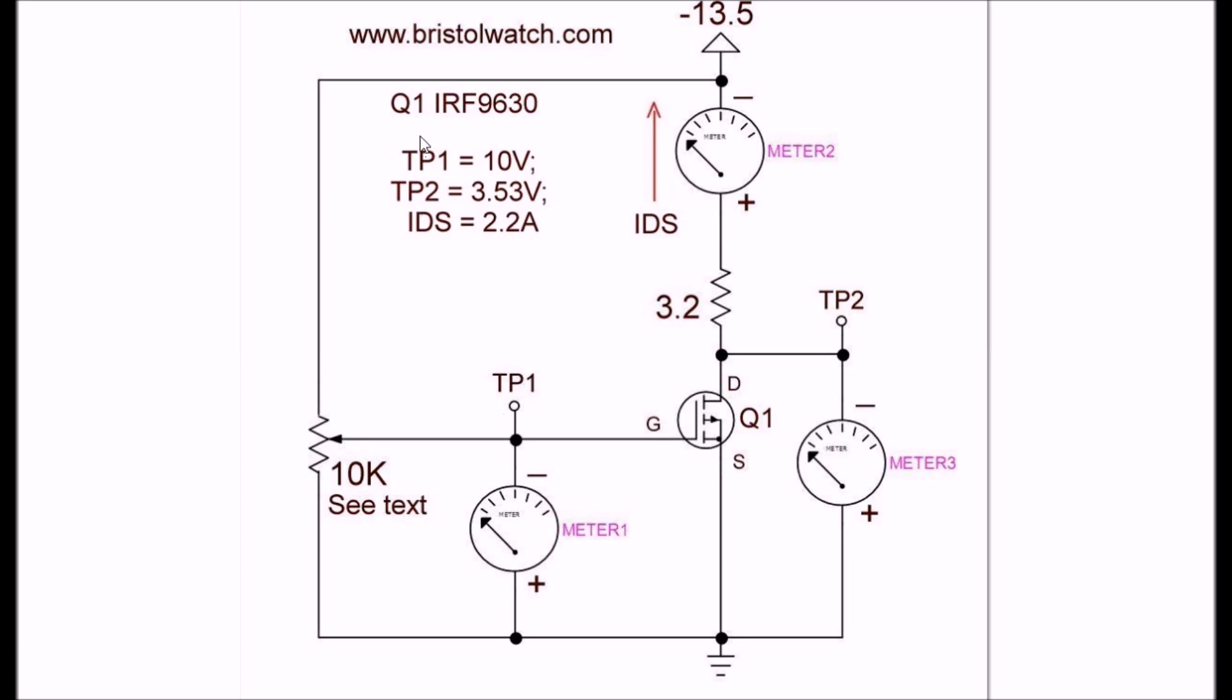Even when I took test point one to 10 volts, TP2 that's the voltage drain to source is still around three and a half volts and my drain current went up to 2.2 amps. This is not a very good device.